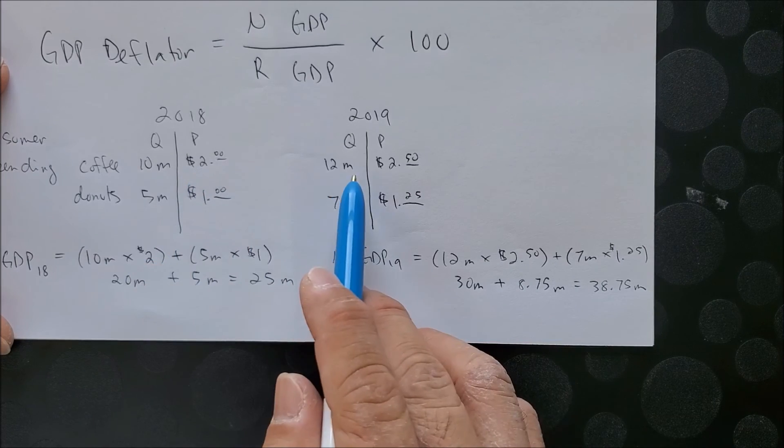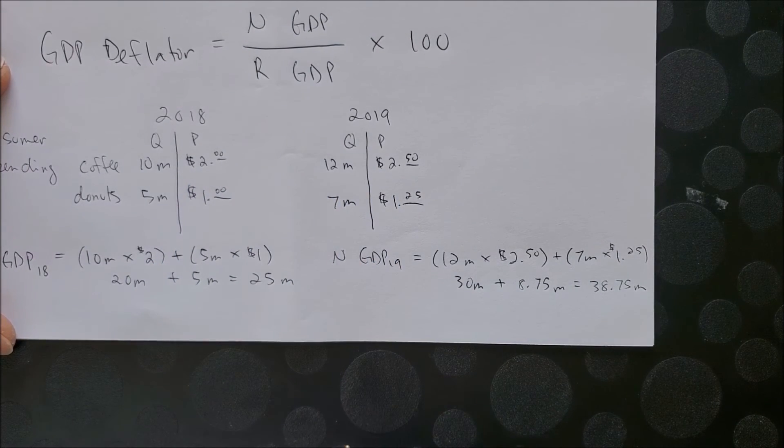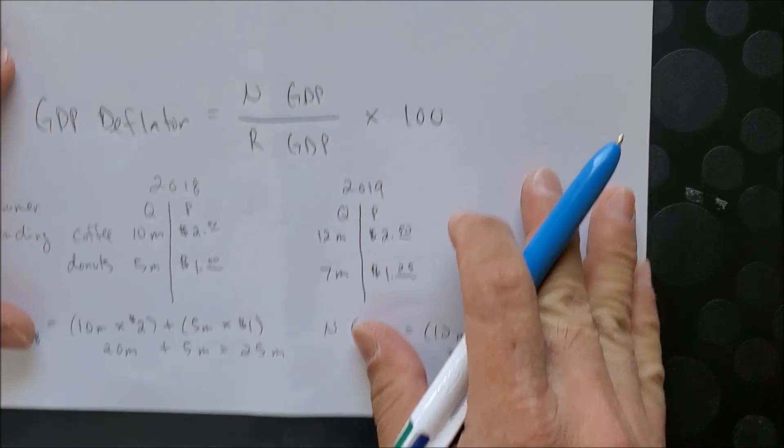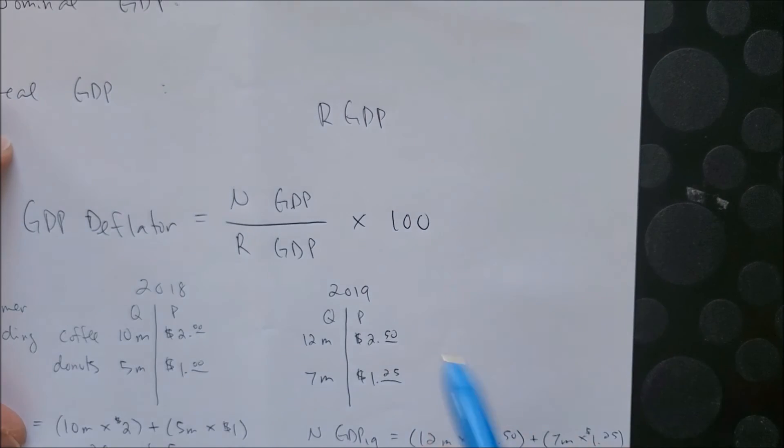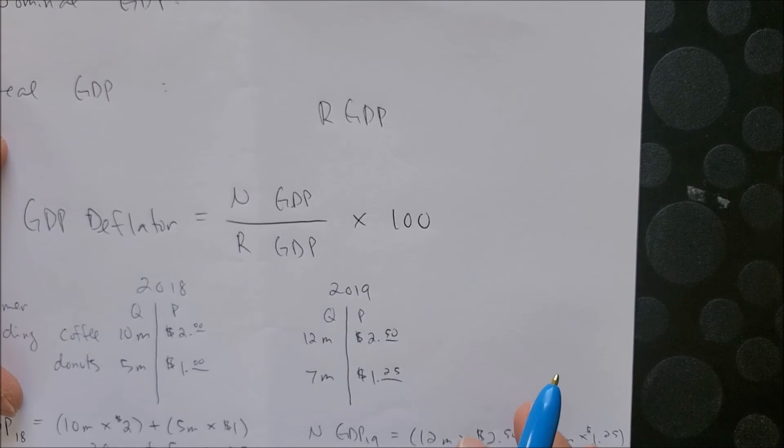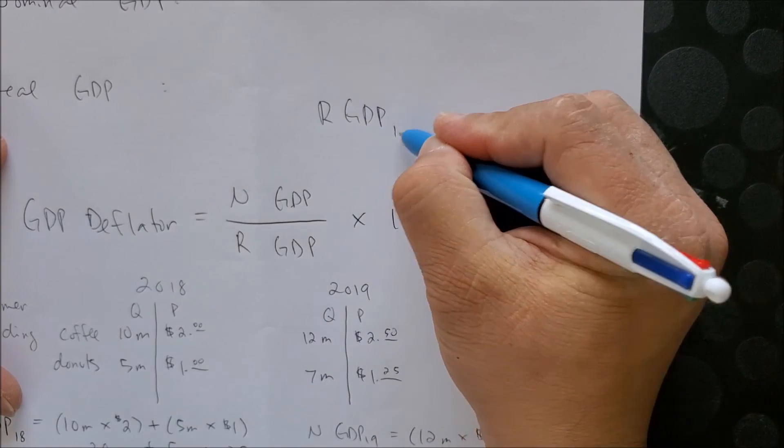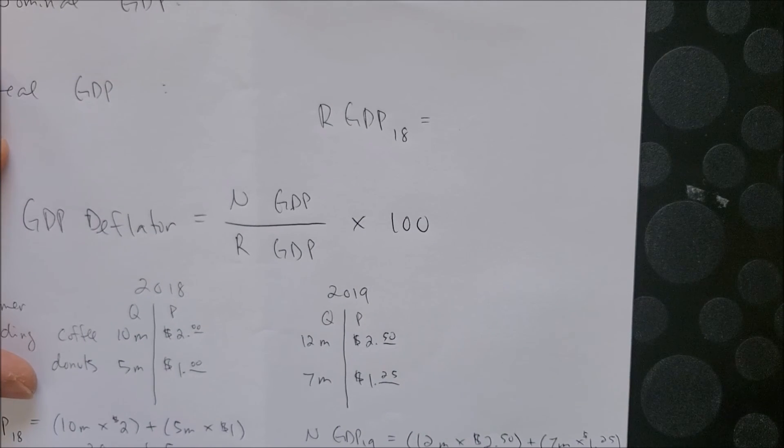Now that we have the nominal value—again, we're looking at quantity times price of that year—now we are interested in finding the real GDP. To find the real GDP, we have to ask ourselves the question: we have to find a base year. Let's use the base year of 2018, and from here we can go ahead and calculate the real GDP.